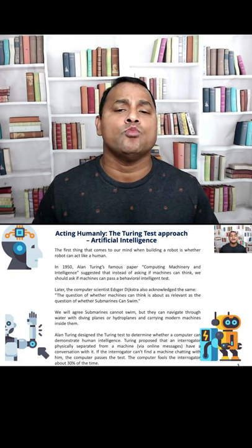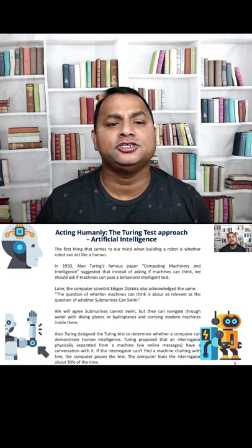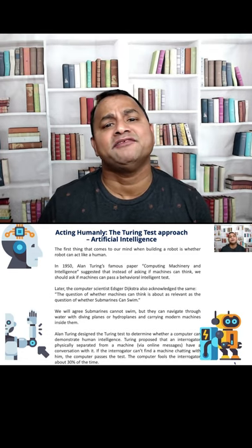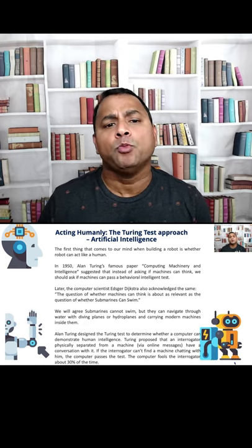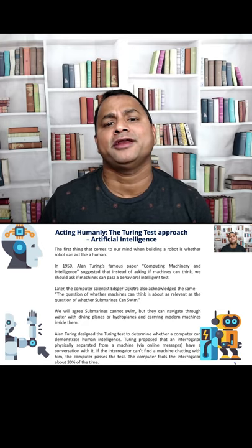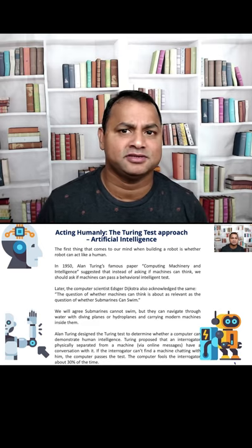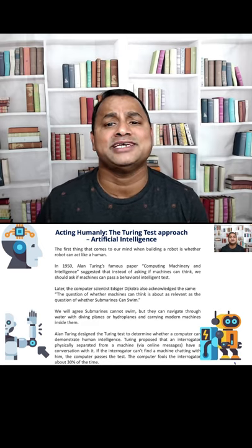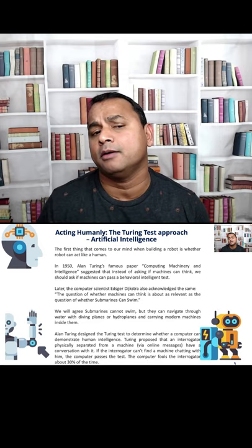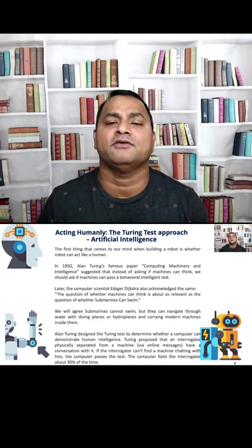Alan Turing designed the Turing Test to determine whether a computer can demonstrate human intelligence. Turing proposed an interrogator physically separated from a machine, communicating via online messages and having a conversation with it. If the interrogator can't tell they're chatting with a machine, the computer passes the test. The computer fools the interrogator about 30 percent of the time.